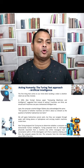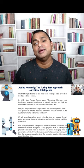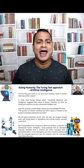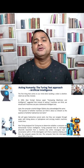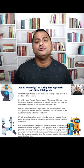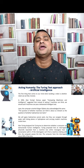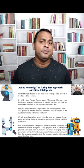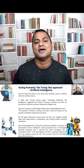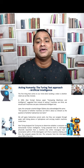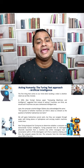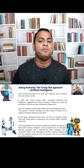Acting humanly: the Turing Test approach. The first thing that comes to our mind when building a robot is whether a robot can act like a human. In 1950, Alan Turing's famous paper 'Computing Machinery and Intelligence' suggested that instead of asking if a machine can think, we should ask if a machine can pass a behavioral intelligence test. Later, computer scientist Edsger Dijkstra acknowledged the same: 'The question of whether a machine can think is about as relevant as the question of whether submarines can swim.' We agree, because submarines cannot swim, but they can navigate through water.